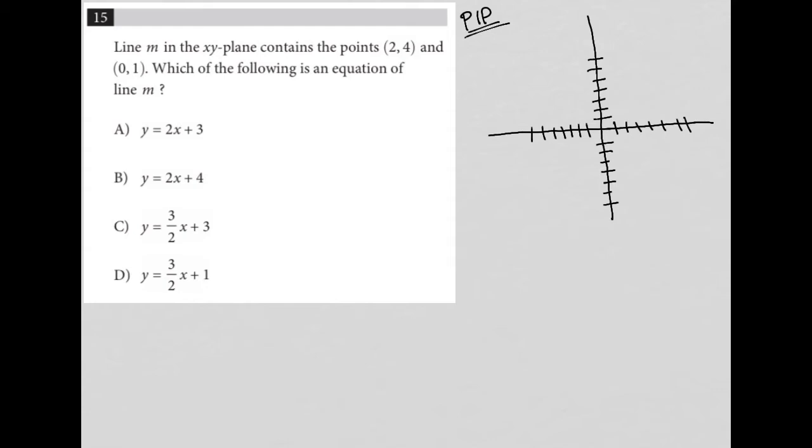So what do I know? So I have a point at (2, 4), so that'd be 2 and then 4 would be here, so I'd have a point right there. And (0, 1), so I'd have a point also right here, because that's going to be 1. So my line, this line M, basically looks like that. So that is M.